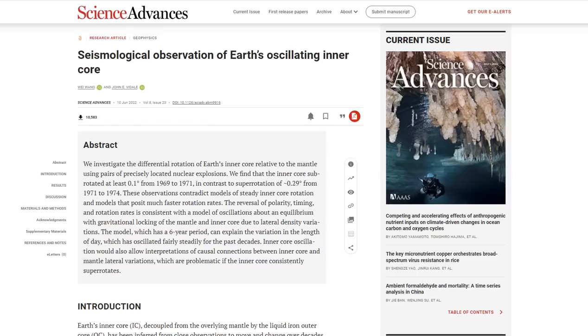According to John E. Vidal, the co-author of the study and Dean's Professor of Earth Sciences at USC Dornsife College of Letters, Arts and Sciences: "We can see that the Earth's surface shifts compared to its inner core, as people have asserted for 20 years. However, our latest observations show that the inner core spun slightly slower from 1969 to 1971 and then moved the other direction from 1971 to 1974."